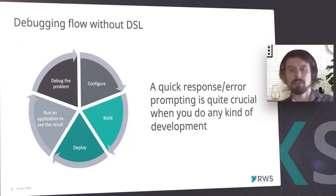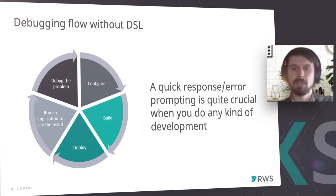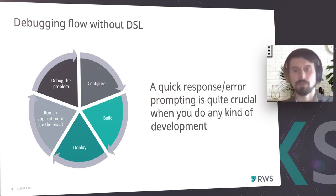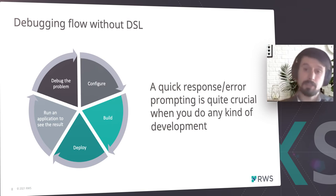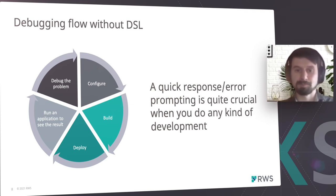Another slide I want to draw your attention to is the debugging flow. Without DSL, we could have a very large feedback loop. First you need to configure — and during configuration you don't have any intelligence, so you won't be able to see any errors at that moment. Then you have to build, then deploy, and only after that can you run your application on a test environment to see the end result. Only after that will you be able to debug the problem — quite a lot of steps just to get feedback about your configuration.